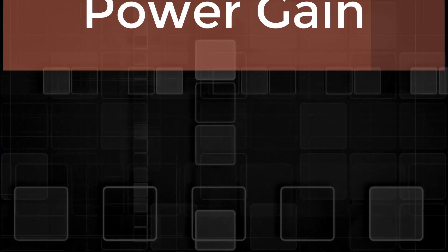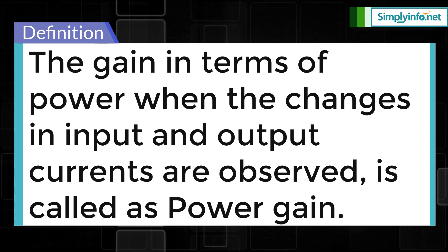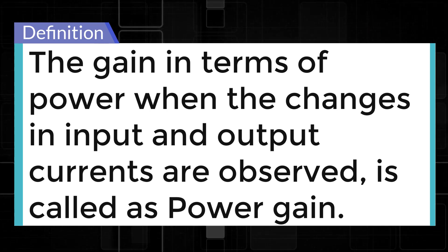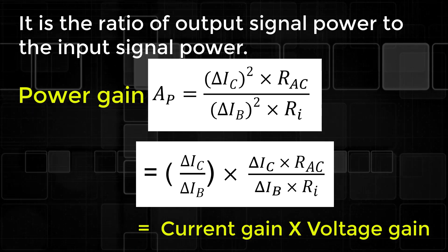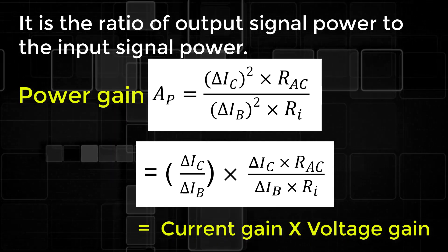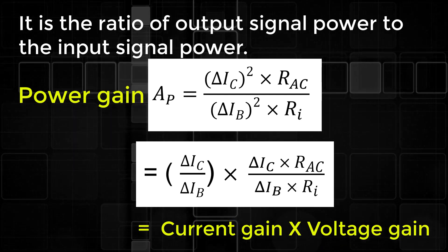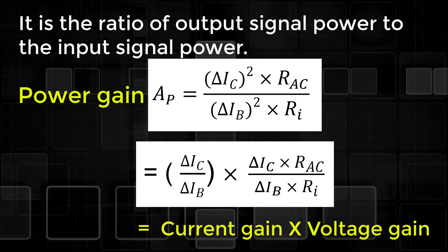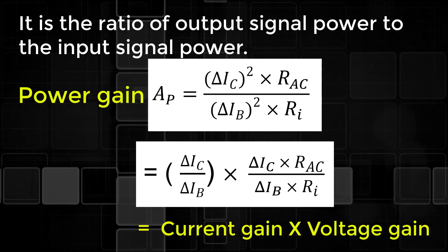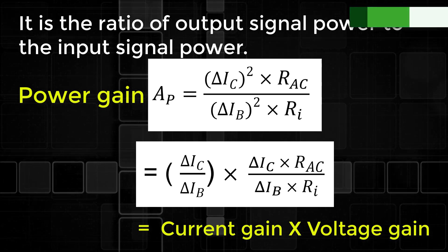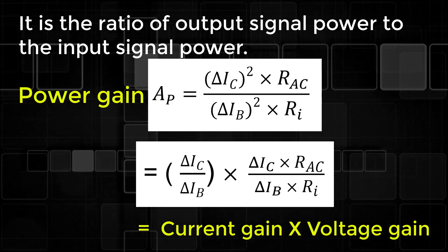Power gain: The gain in terms of power when the changes in input and output are observed is called power gain. It is the ratio of output signal power to the input signal power. Power gain AP = (ΔIC² × RAC) / (ΔIB² × RI) = (ΔIC / ΔIB) × (ΔIC × RAC) / (ΔIB × RI) = current gain × voltage gain. These are all the important terms which refer to the performance of amplifiers.